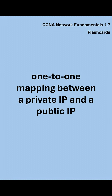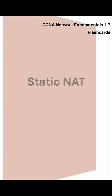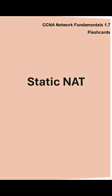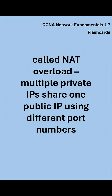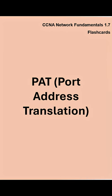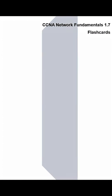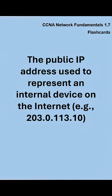Static NAT uses a one-to-one mapping between a private IP and a public IP. PAT, also called NAT overload, allows multiple private IPs to share one public IP using different port numbers. The inside global address is the public IP address used to represent an internal device on the internet.